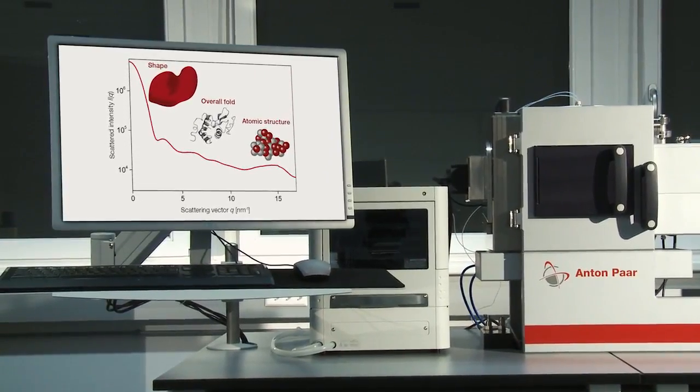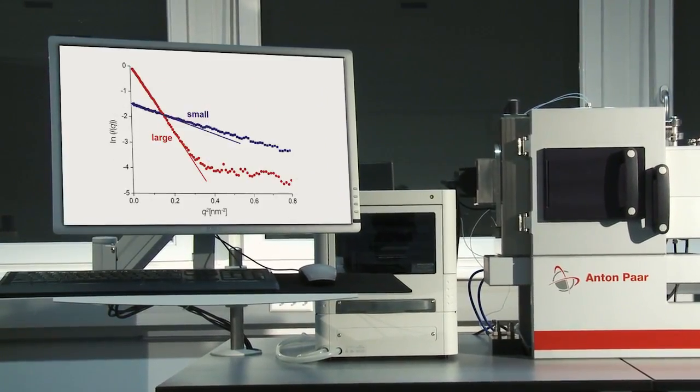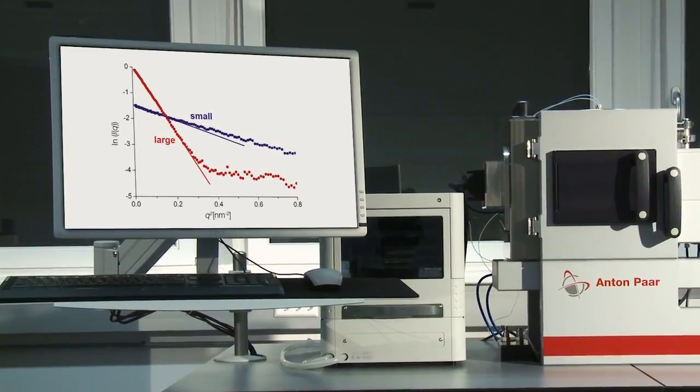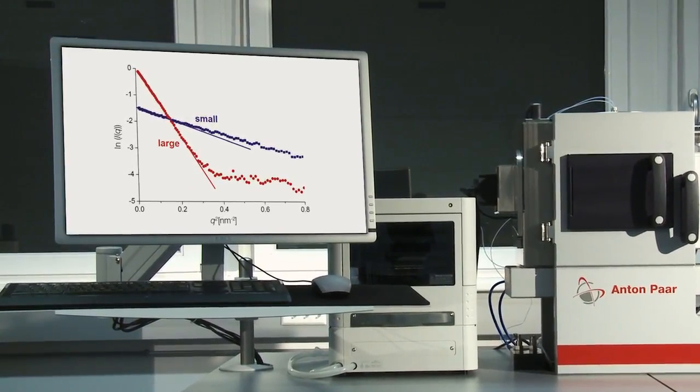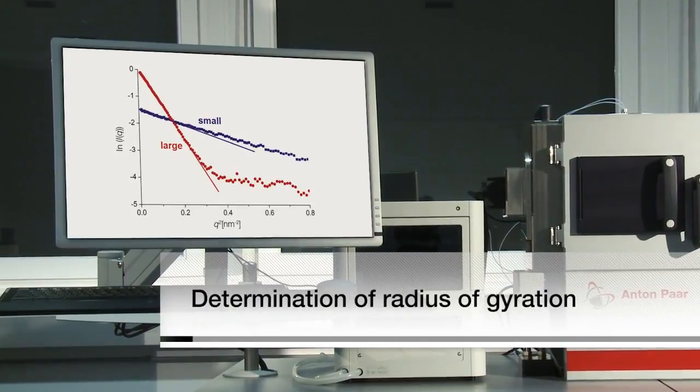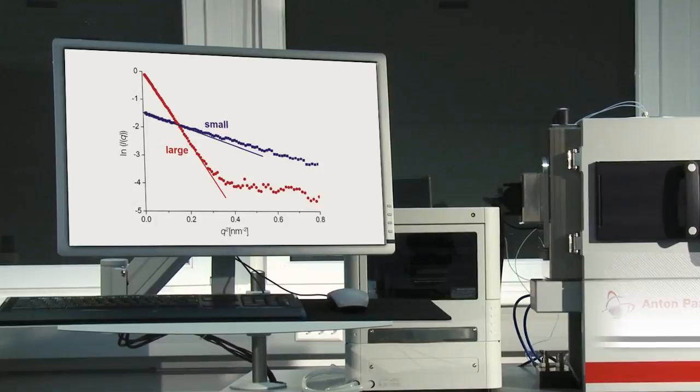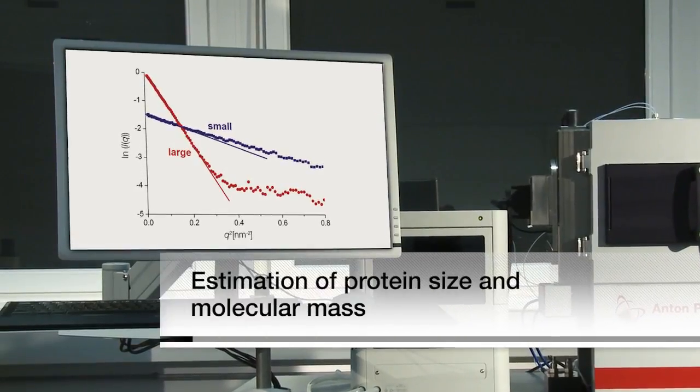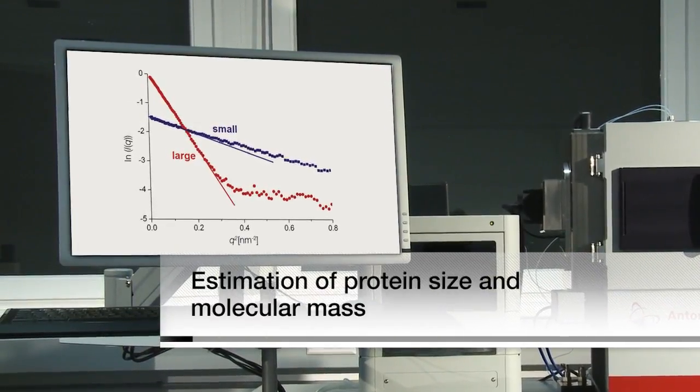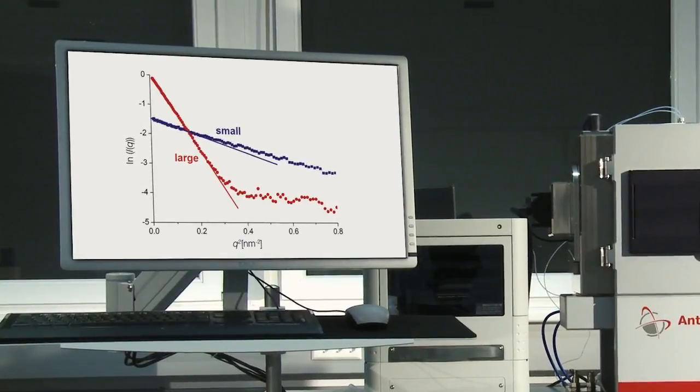Using the well-established Guinier analysis, you can gather information about the geometry of macromolecules. The radius of gyration gives you the size of your macromolecule, while the mass of the molecule can be estimated from I0, the intensity at scattering angle zero in the Guinier plot.